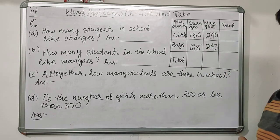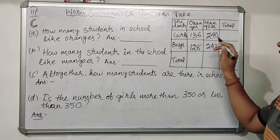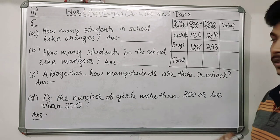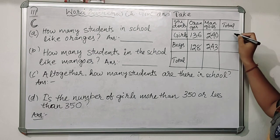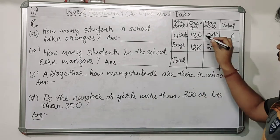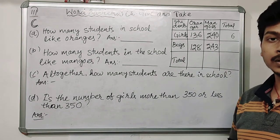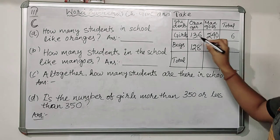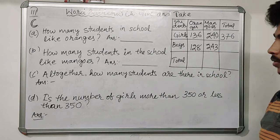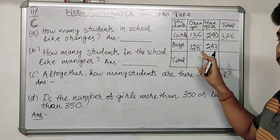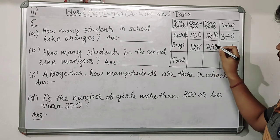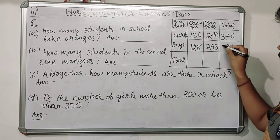Total number of girls: we have 130, 136, and 240. Six plus zero is six, three plus four is seven, two plus one is three — so total girls is 376. Now total number of boys who like oranges and mangoes: 128 plus 243. Eight plus three is 11, carry 1; 2 plus 4 plus 1 is 7; two plus one is three — so total boys is 371.